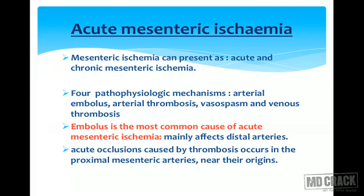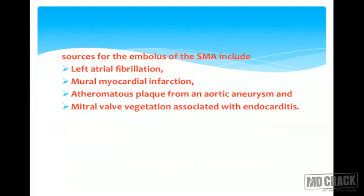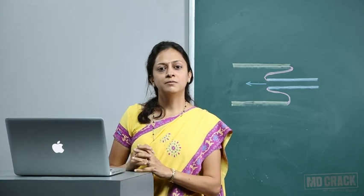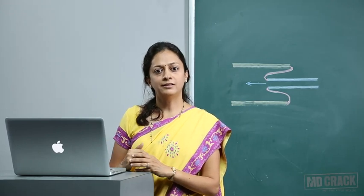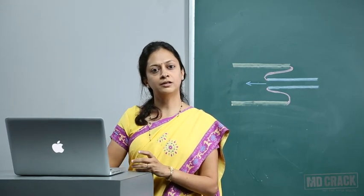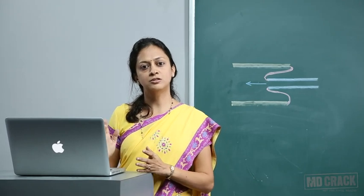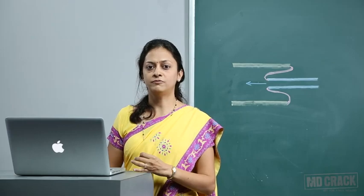Sources for embolus of the superior mesenteric artery include left atrial fibrillation, mural myocardial infarction, atheromatous plaques from the aortic aneurysm, and mitral valve vegetation associated with endocarditis. Exam questions will ask which condition is not a causative factor of superior mesenteric artery embolus, so you need to identify which option is not included in these causes.